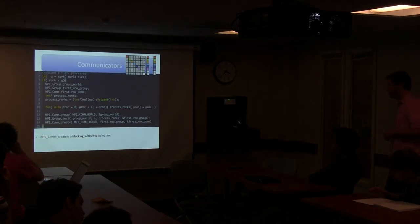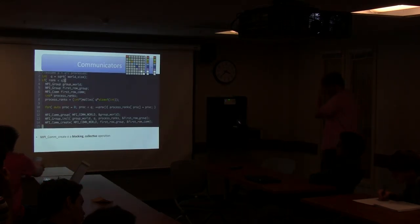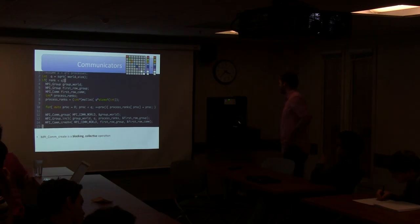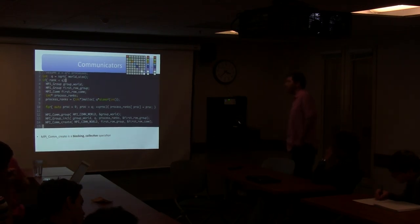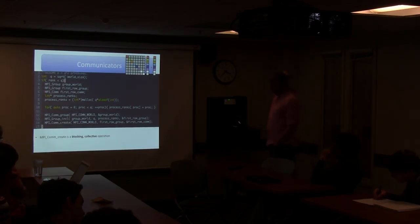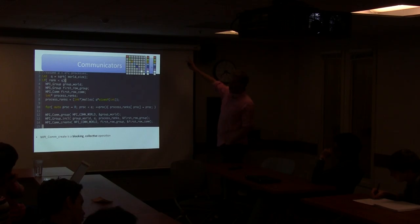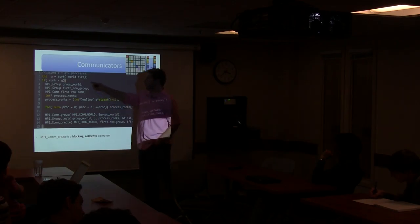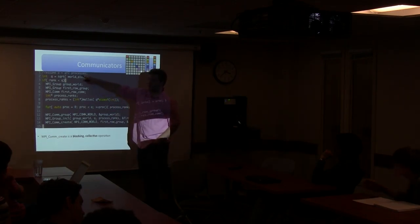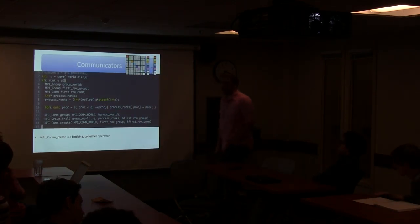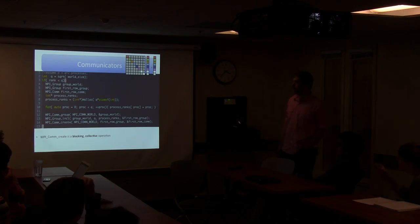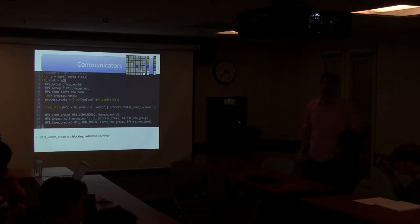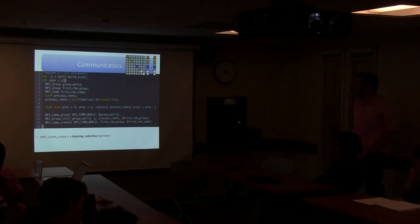Let's look at an example. Assuming a standard header and a square number of processors P = Q squared, this little code is going to create a list of integers labeled 0 to Q-1, define the world group, the first row group, and the first row communicator. The goal is just to create this row communicator object.